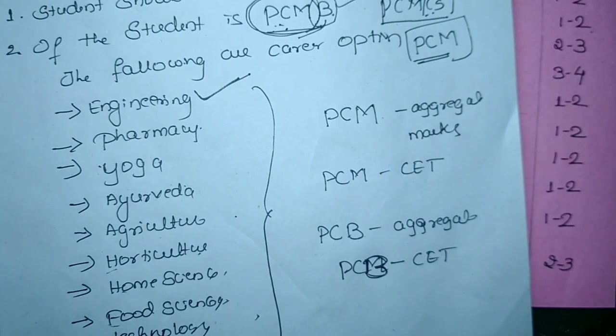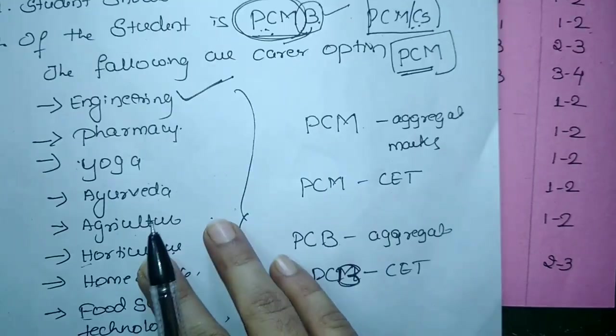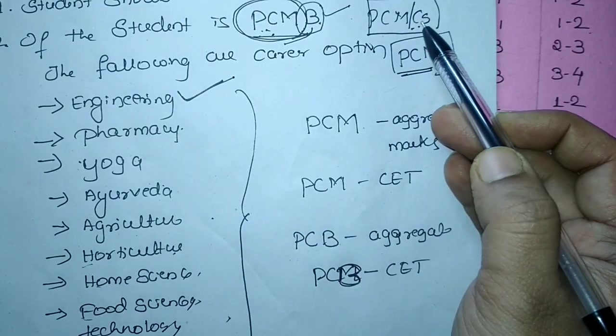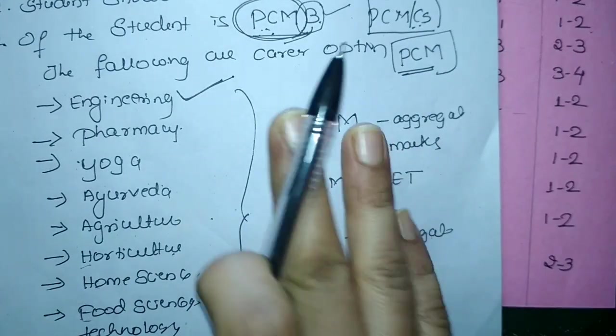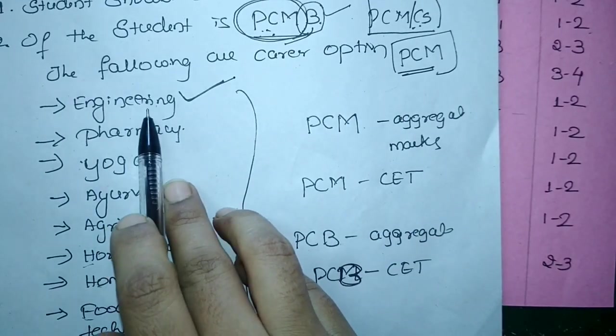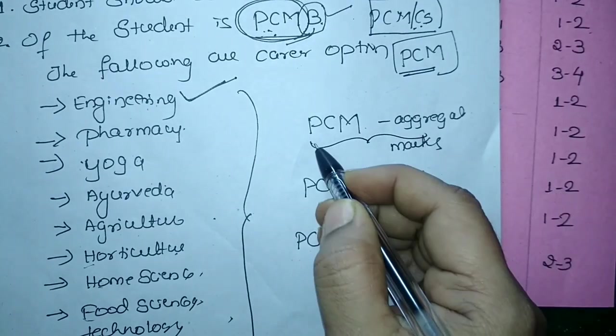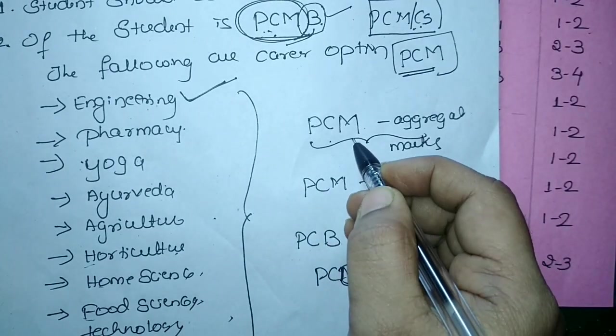But now how exactly exam will be conducted? So now for example I have CS students who is concentrating only to go for the engineering. So for that student they are going to consider physics, chemistry, maths aggregate marks of second PU.